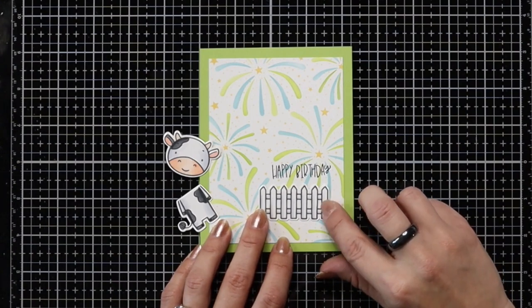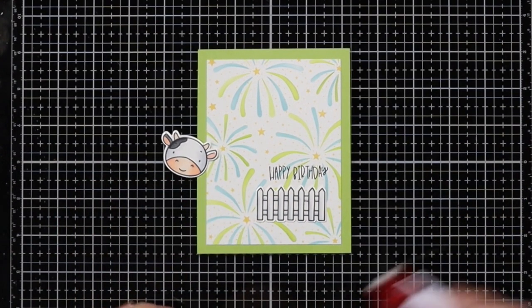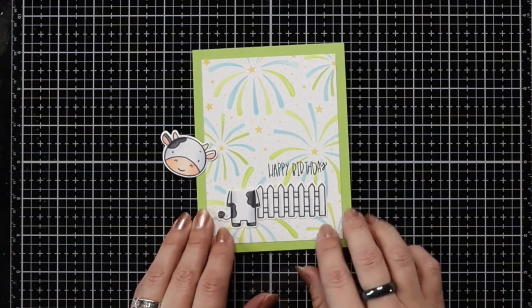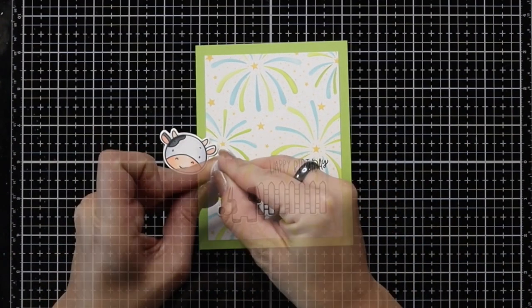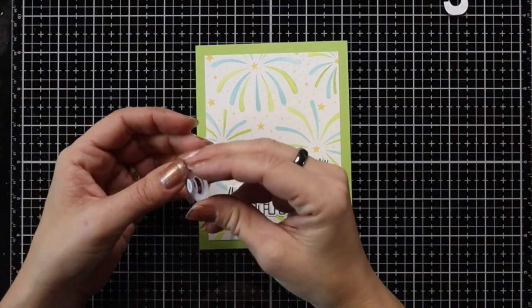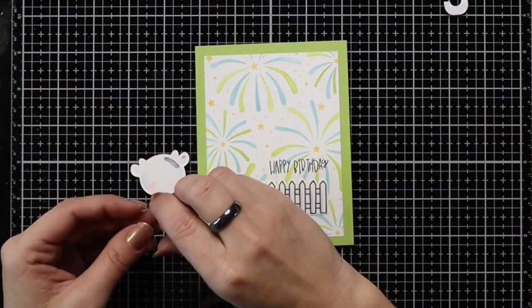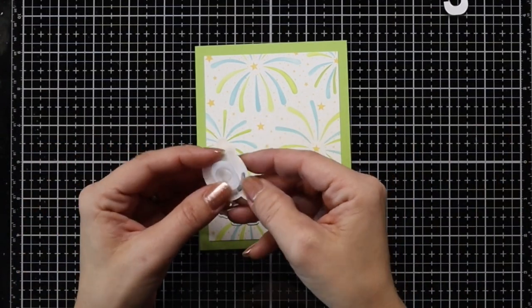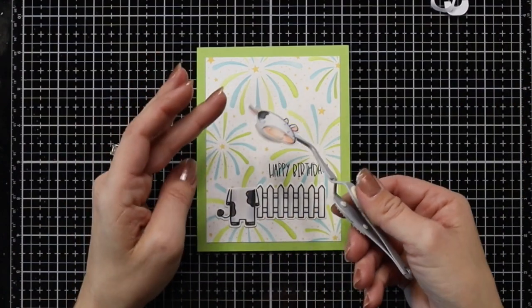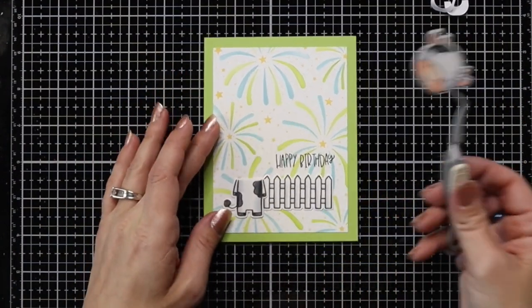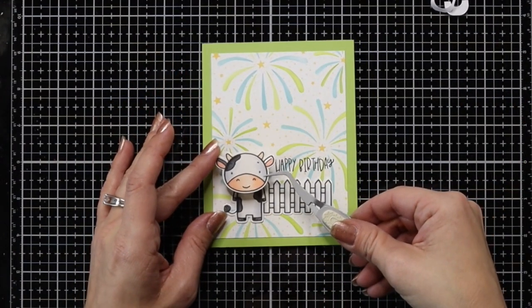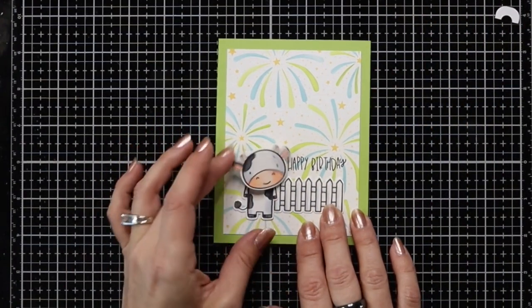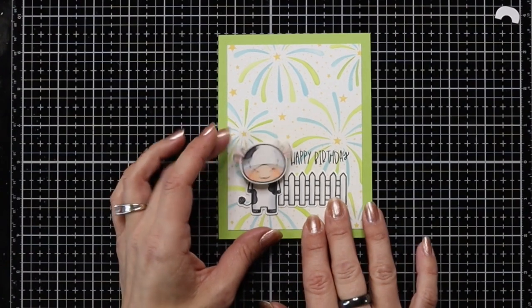After my sentiment is stamped I'm going to take the tape runner and adhere my fence and the body of the cow. I kept this really nice and flat because I'm going to make this a little interactive. There were some wobbles in the card kit and I think it's a really great idea to add these little wobblers. These are self-adhesive. You just remove the backing, attach it to the head of your cow, then remove the backing on the back and attach that right over the body of the cow. That's why they come in two separate stamps so you can make an interactive card.